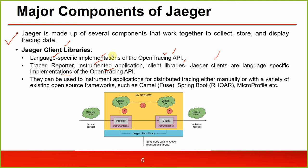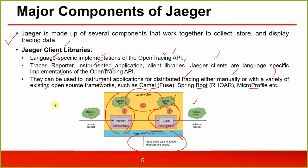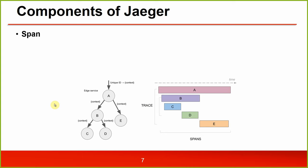Client libraries can be used to instrument applications for distributed tracing either manually or with a variety of existing open source frameworks such as Camel, Spring Boot, or MicroProfile. Step one is context span creation - that is instrumentation. The service context span is created, implemented, and then the send traces data to Jaeger background thread works. Now revisiting components of Jaeger - a span represents a logical unit of work in Jaeger.